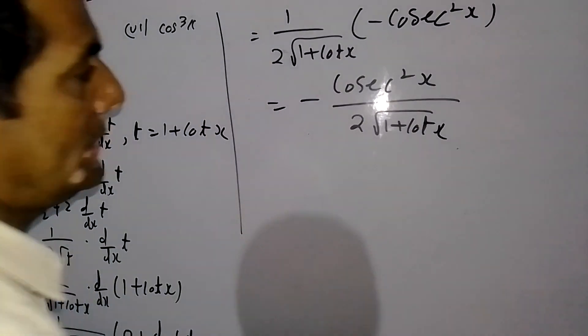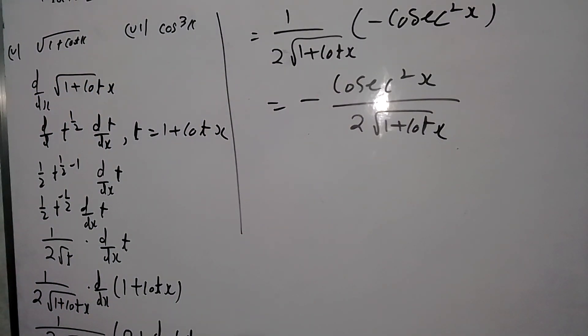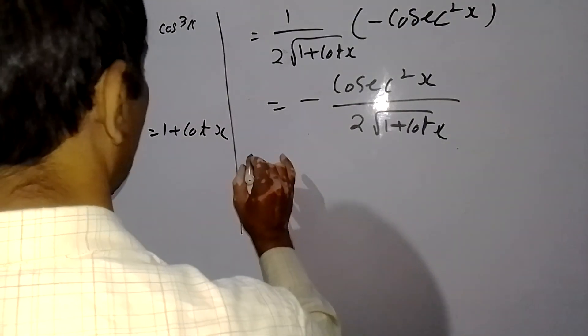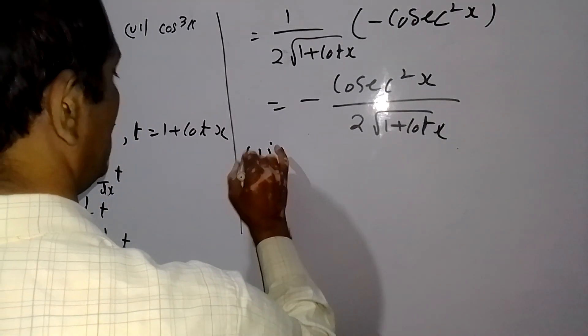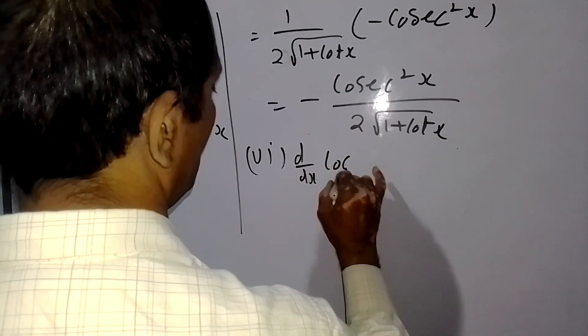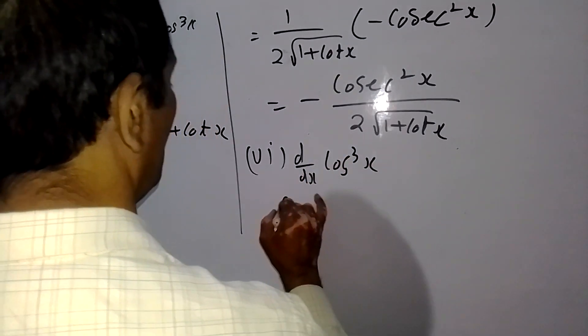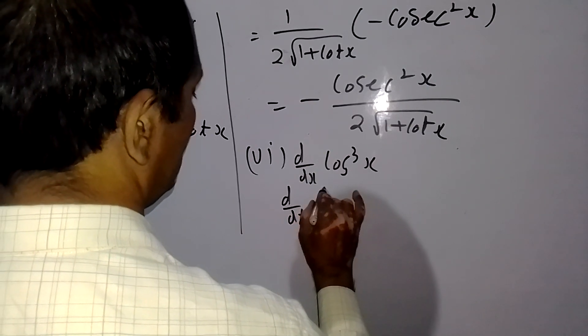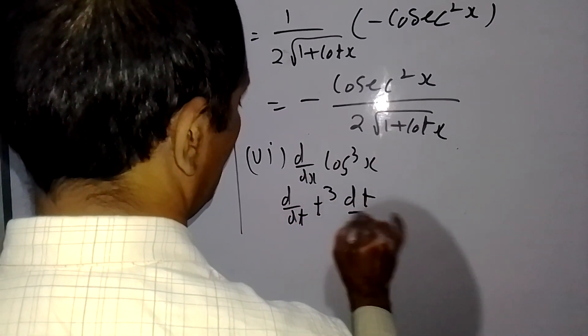Second part is 6th part. So 6th part is d by dx, d by dx, d by dt of T raised to 3, dt by dx.